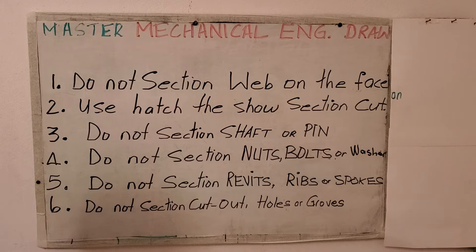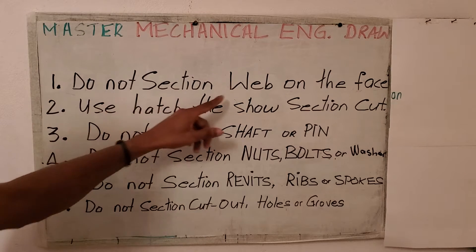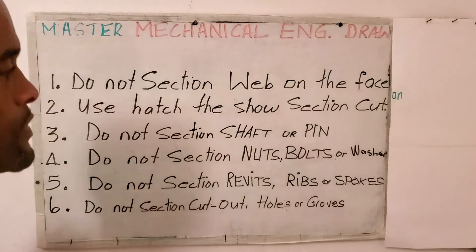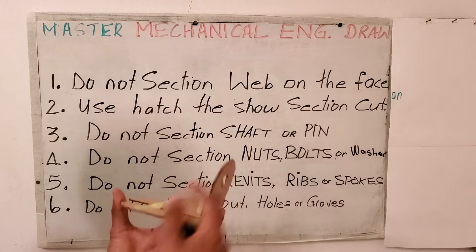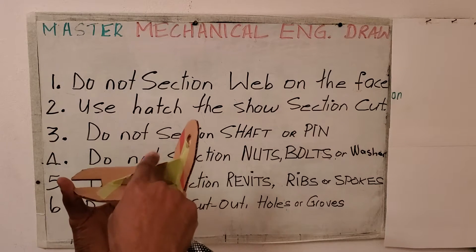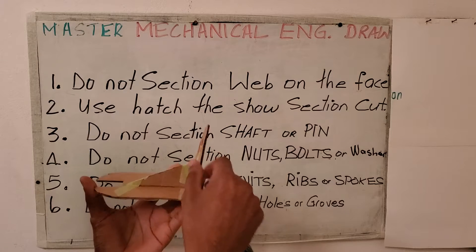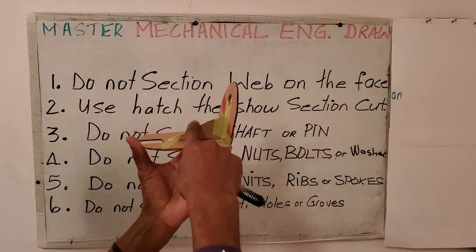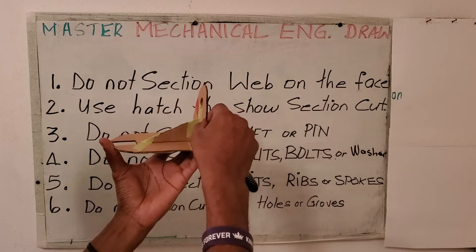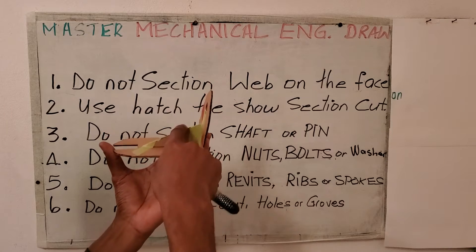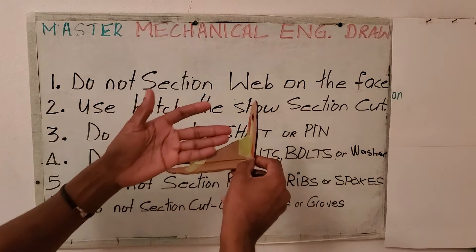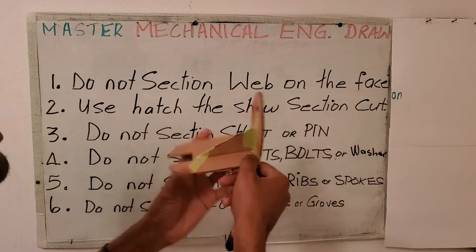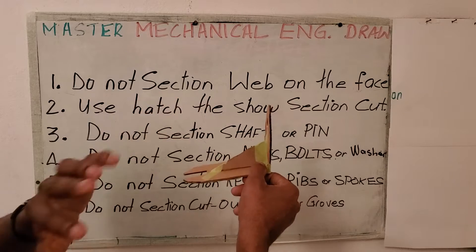The first rule states that we do not section web on the face. What is a web? A web is a sort of reinforcement — it acts as a support to give material its rigidity. For example, this triangular piece here is a support that helps to strengthen this component. So we do not section web when it is cut along the face, along the flat side like here. We do not section it.